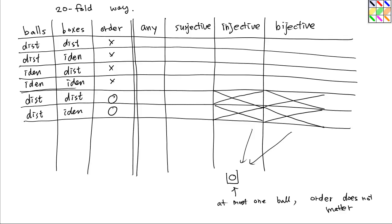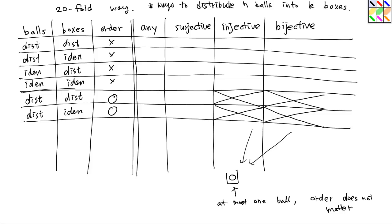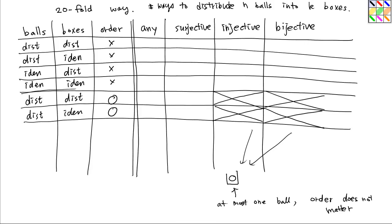In fact, we have already computed some entries. The number of ways to distribute n balls into k boxes when both balls and boxes are distinct is k to the n. For the injective case, it is k falling factorial n. So we have filled these two entries, and later on we will try to fill the remaining entries. This is the end of the video. Thank you.